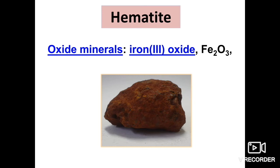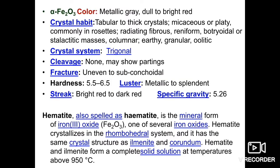The next one is hematite, also an oxide mineral with formula α-Fe2O3. Color is metallic gray to dull bright red. Crystal habit is tabular to thick crystals, micaceous or platy, commonly in rosettes, radiating fibrous, reniform, stalactitic or massive, and columnar, earthy, granular, as well as oolitic. Crystal system is trigonal. Cleavage is not present, only basal partings.